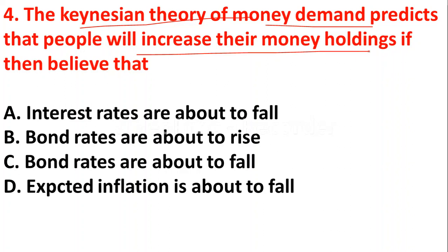The next question: the Keynesian theory of money demand predicts that people will increase their money holdings if they believe that — option A: interest rates are about to fall, option B: bond rates are about to rise, option C: bond rates are about to fall, option D: expected inflation is about to fall.